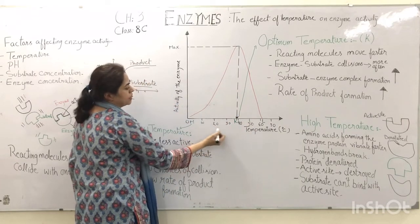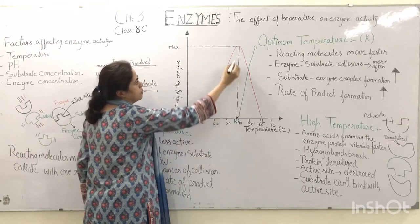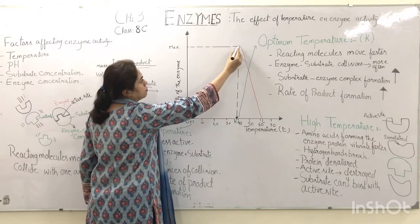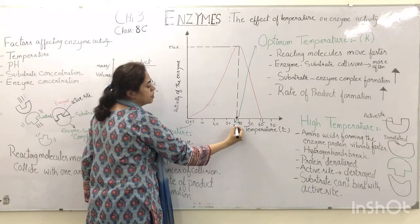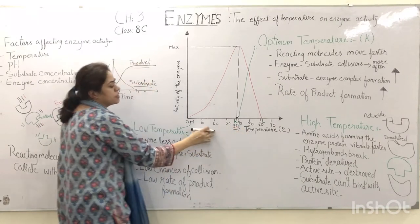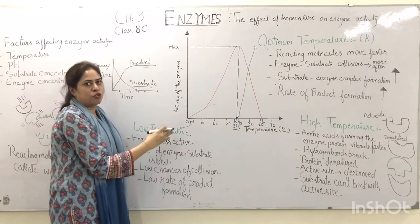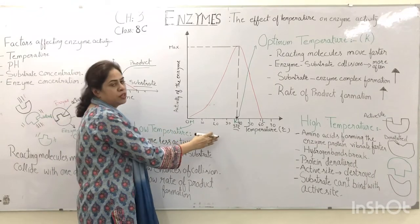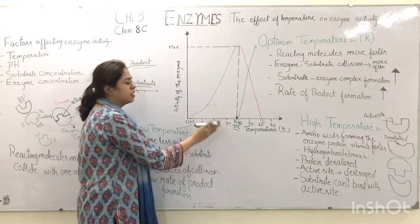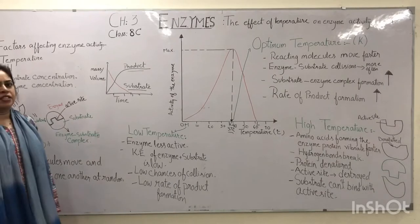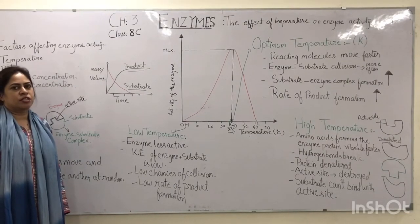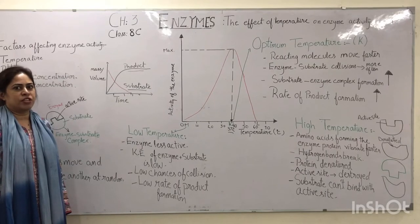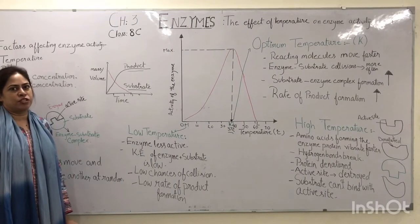The temperature where the maximum point is reached is about 37 degrees centigrade. This means that the enzyme we are discussing is from the human body. The factors that affect enzyme activity are pH, temperature, substrate concentration, and enzyme concentration.